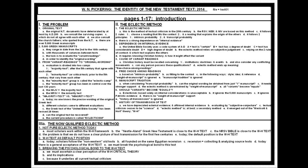Let's take a look at the Eclectic method in block two — the current textual critical method of the 20th and 21st century. The RSV, the NEB, and the NIV are based on this method. They follow two rules: choose a reading that fits the context, and choose a reading that explains the origin of the other divergent readings. It follows two principles — intrinsic probability and transcript probability — but there is a strong dependence on internal evidence.